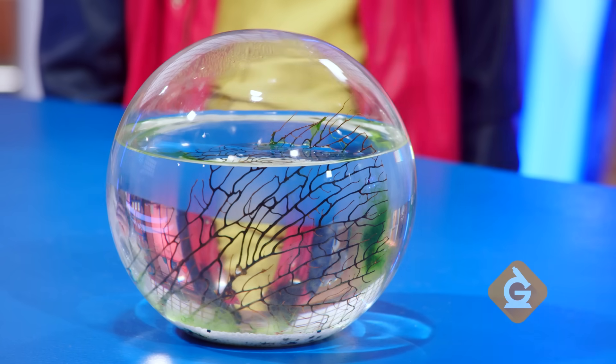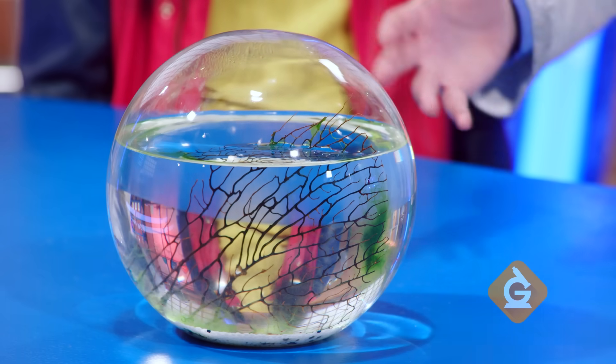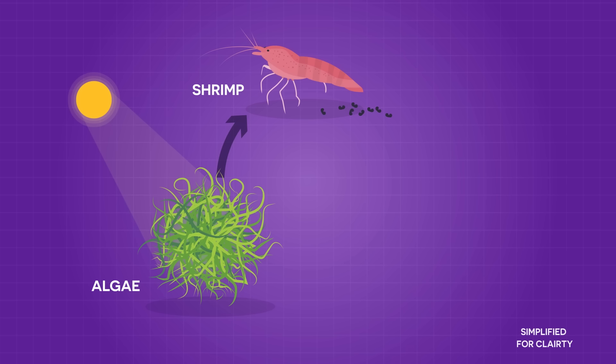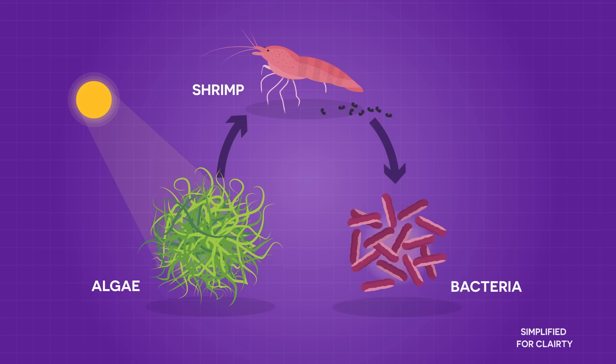Let's look at our sealed ecosphere as an example. In our ecosphere, light energy helps the algae grow. The algae is then eaten by the shrimp. When the shrimp poop, tiny bacteria in the water feed on it. The bacteria then convert that poop to nutrients that help the algae grow. Wow, it's like a cycle. Exactly.